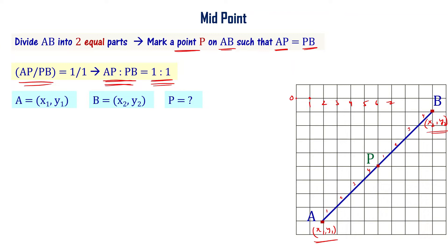For example, I have a line from one to five. The midpoint is 1 plus 5 divided by 2, that is equal to 6 by 2, that is three. I have another line starting from 2 and going up to 6. What is its midpoint? 2 plus 6 divided by 2, that is 8 by 2, that is equal to 4.